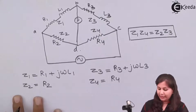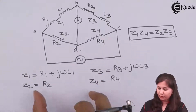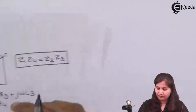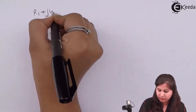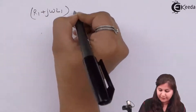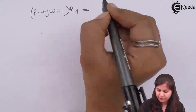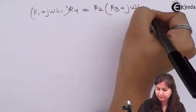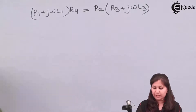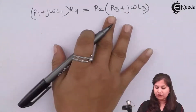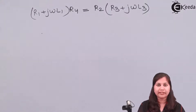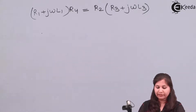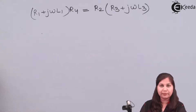So we have got the values of Z1, Z2, Z3 and Z4. We are going to simply put their values into the balance equation. Now in this equation, we are having terms which have only the real part and terms which have only the imaginary part. So we are going to separate the real parts and the imaginary parts of this equation.